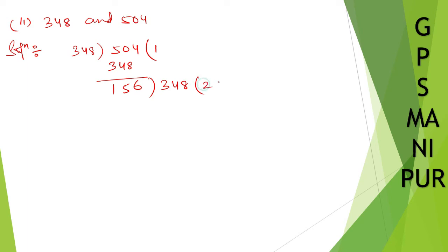156 into 2. 156 into 2, 6 into 12, 5 into 10, 11, 202, 312. 312. No, no, 312, right? This is 3. Remainder was there, no? So 312. If you subtract, you'll get 36. I hope this much is clear to you.